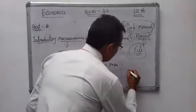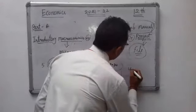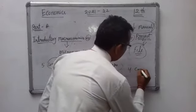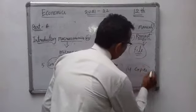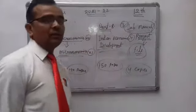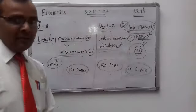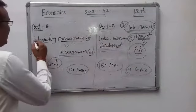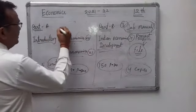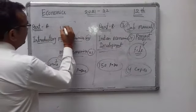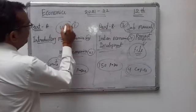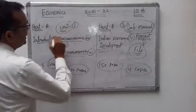So you have to prepare all four items for the whole syllabus. In the next video, we will start Chapter 1, Unit 1 of the Part A book.